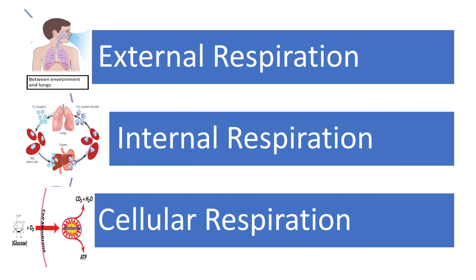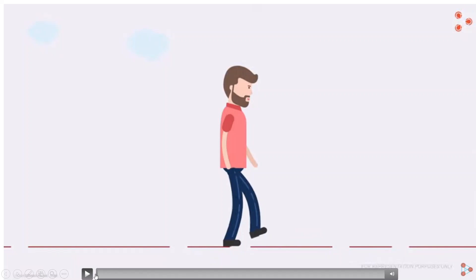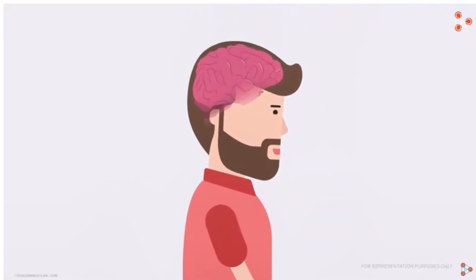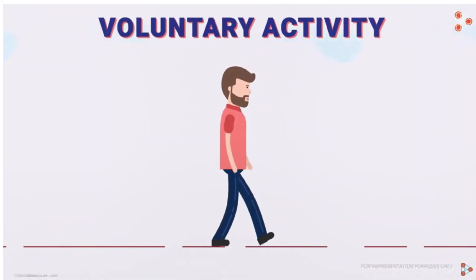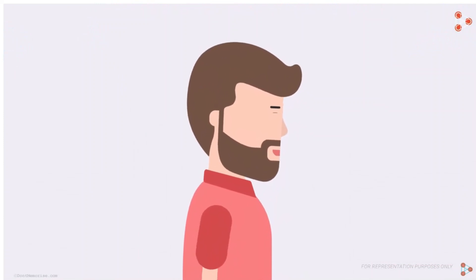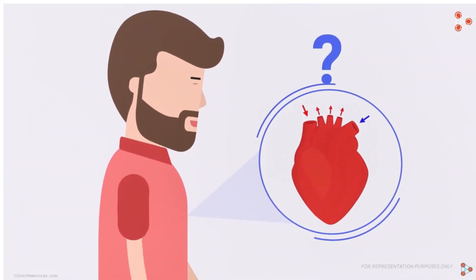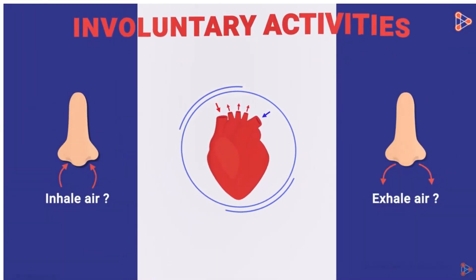We will now watch a video from Don't Memorize that will help us understand the steps involved in respiration better. Our brain thinks about movement, instructs the respective muscles, and helps us perform tasks — this is a voluntary activity. But do we need to remind ourselves to inhale and exhale, or remind our heart to beat and pump blood? No — that just happens without our notice. These are examples of involuntary activities.